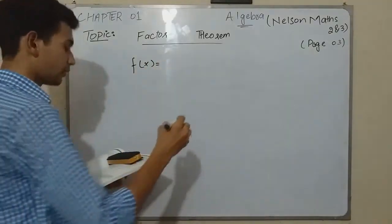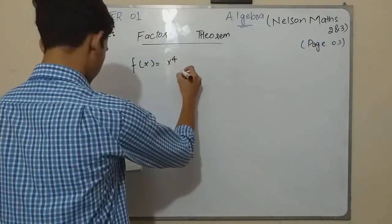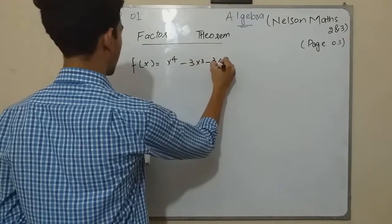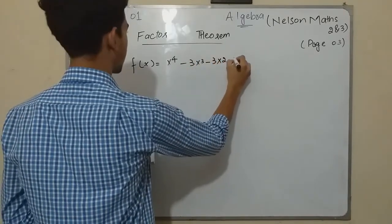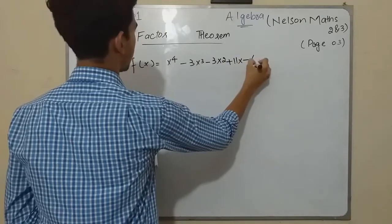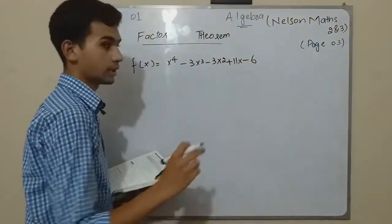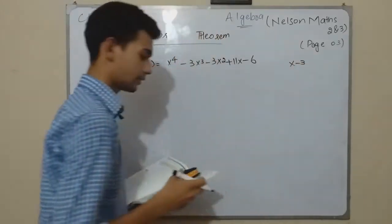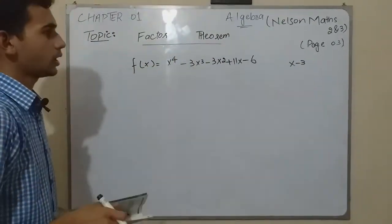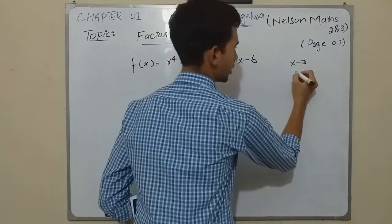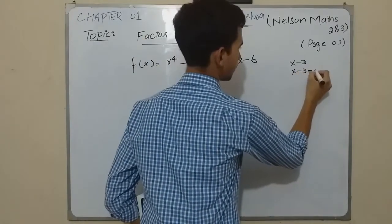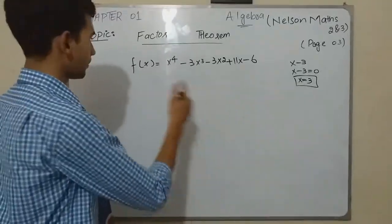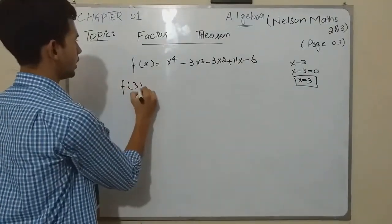They give us a polynomial function x⁴ - 3x³ - 3x² + 11x - 6 divided by this linear expression x - 3. What if I take this linear expression equal to 0? So the value of x is 3. I'm going to replace x by 3.